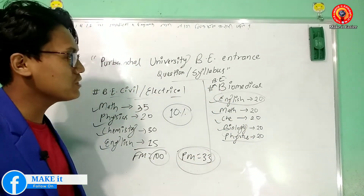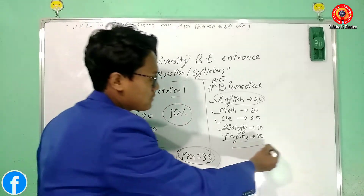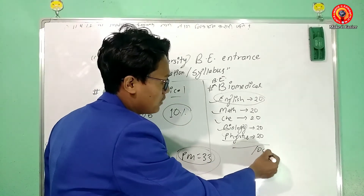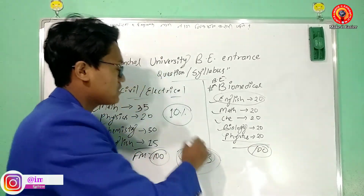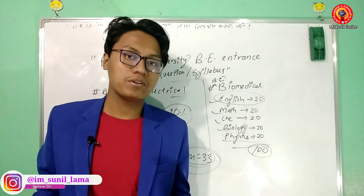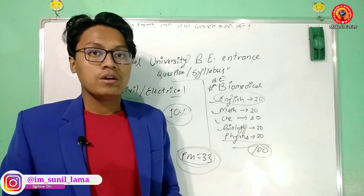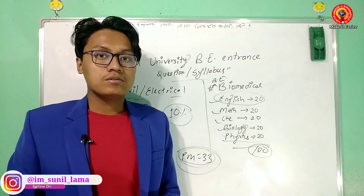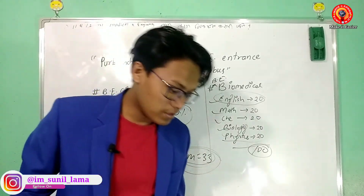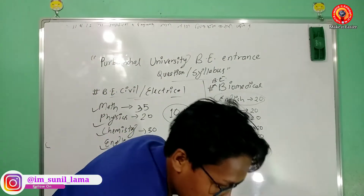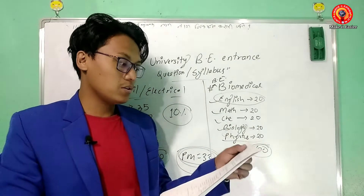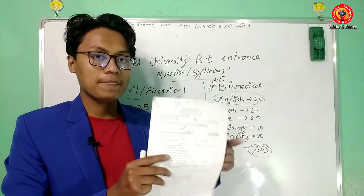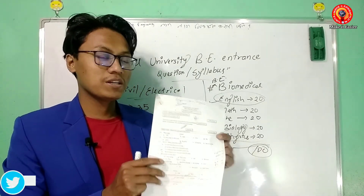The total full marks is 100. The minimum pass marks is 33%. So now we will also look at the B.E. Biomedical model question.